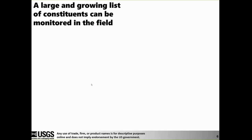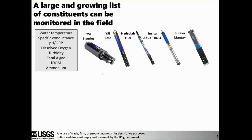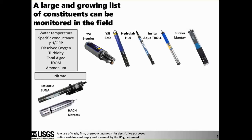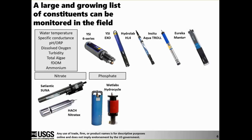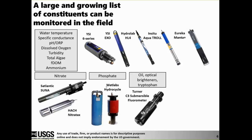There is a large and growing list of constituents that can be monitored in the field. Traditional parameters — water temperature, conductivity, pH, dissolved oxygen, and turbidity — can all be placed on one water quality sonde manufactured by a number of companies. Additional probes can measure dissolved organic material, ammonium, and total algae. There are standalone instruments for nitrate and phosphate, and recently developed fluorometers that can be deployed unattended to measure oil, optical brighteners, and tryptophan — a human wastewater signature.